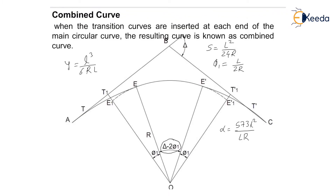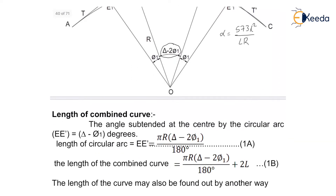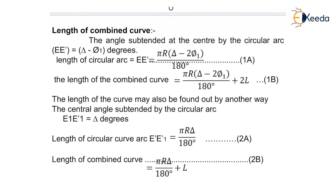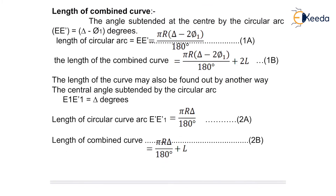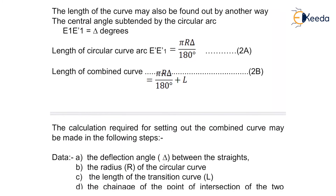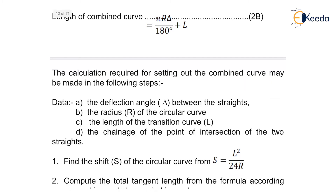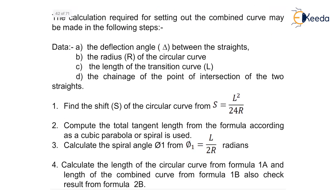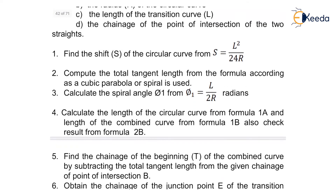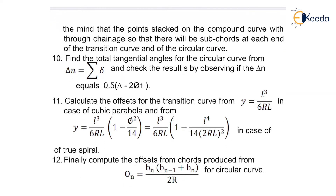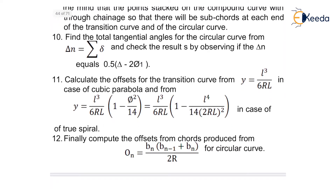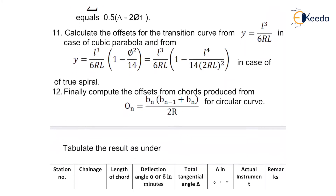After finding out all this, the procedure is written in the successive slides for your reference. For the circular curves, we can use the formula: On = BN multiplied by (BN-1 + BN) upon 2R.